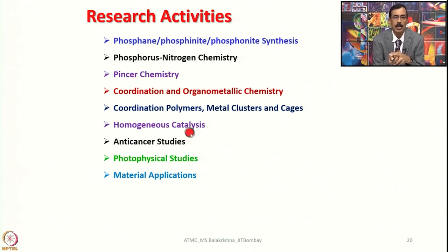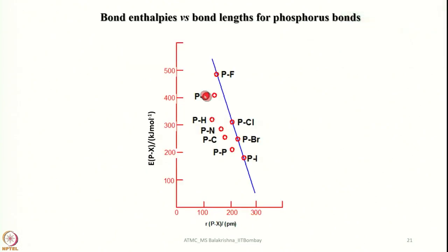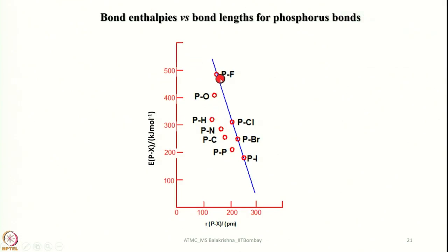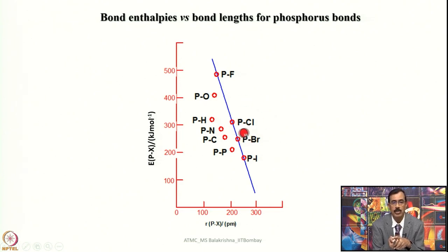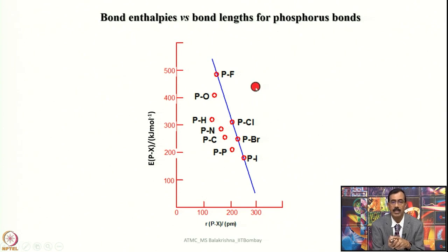With less toxic phosphines one can think of anti-cancer studies and photophysical studies, and they can be very handy in material applications. Now we should look into bond enthalpies. Phosphorus-to-fluorine bonds are quite strong whereas phosphorus-to-iodine bonds are very weak. PCl and PBr bonds can be handled nicely — in fact PBr3 is also used as a brominating agent in organic chemistry. The most appropriate and economical compound is phosphorus trichloride, which has optimum properties.